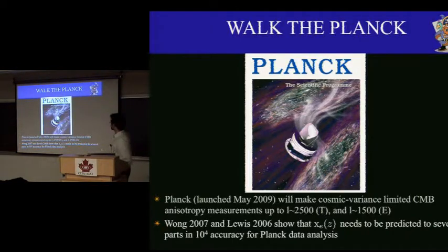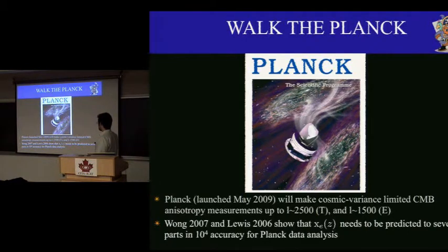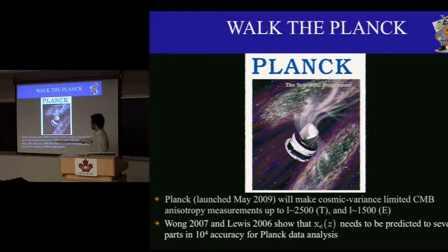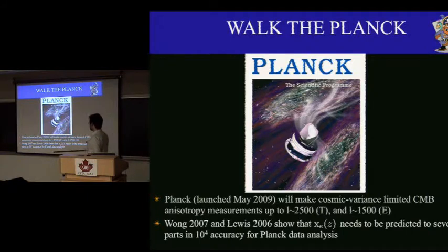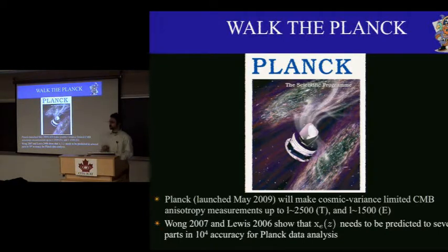The great motivator for a lot of this work is the fact that the Planck satellite has been launched. It's at L2 and it's taking data — there are even partial sky maps. The real hope is that Planck is going to make something like cosmic variance limited measurements of the CMB temperature and E-mode polarization anisotropies to angular scales of L of 2500 and 1500 respectively. The claim is that we want to predict the free electron fraction with somewhere between a few parts in 10^4 and 10^3 accuracy.